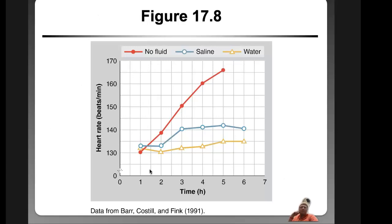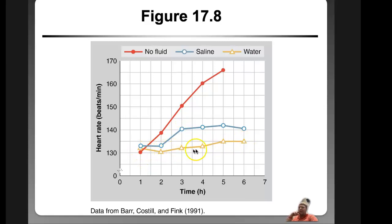We have a game on Thursday with only seven practices and a scrimmage — that's not enough time for a new team. Looking at heart rate during a six-hour treadmill run: water keeps heart rate lower than even a sport drink, which in turn is lower than no fluids at all. That six-hour exercise protocol puts the VO2 max test to shame.